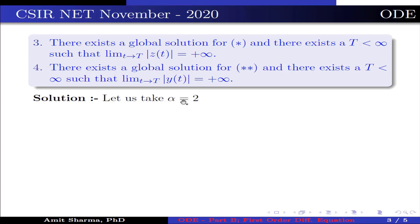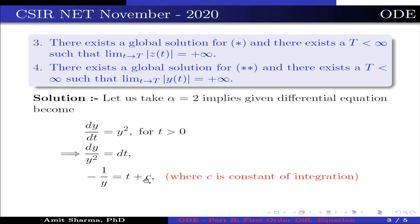Now let us take α = 2, which implies the given differential equation becomes dy/dt = y² for t > 0. This implies dy/y² = dt. Now integrating both sides, we get -1/y = t + c, where c is a constant of integration.